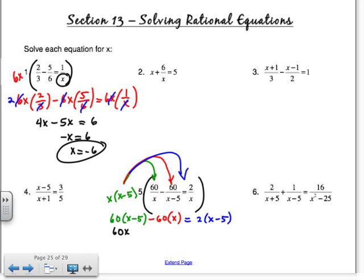60x minus 300 minus 60x equals 2x minus 10. 60x's go away. So I get negative 300 plus 10, so negative 290 equals 2x. So x equals negative 145. Okay, you can go back and check in your original. Negative 145 didn't make it undefined, right? Only 5 and 0 would have. So that's your answer.